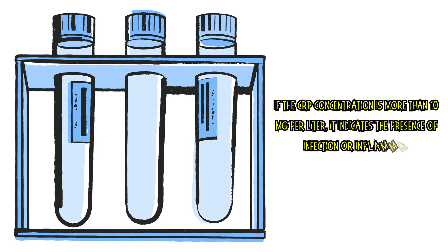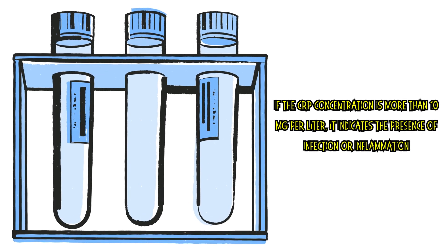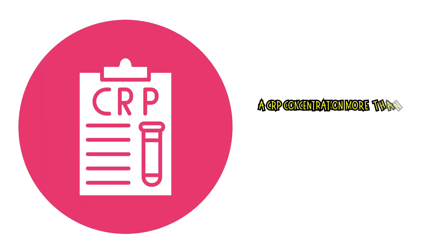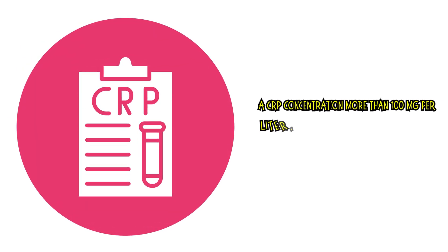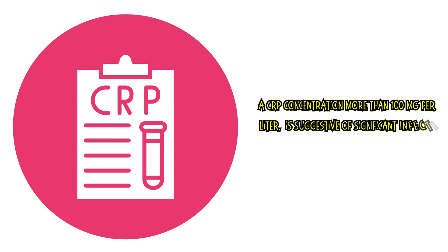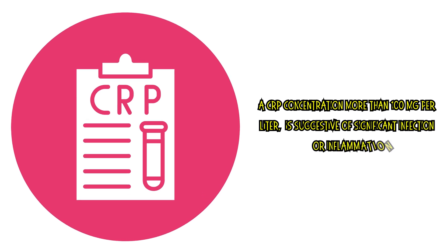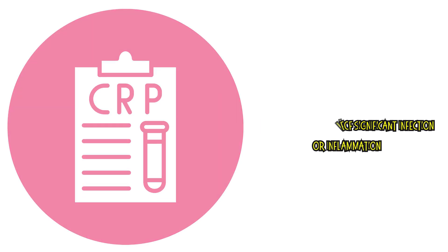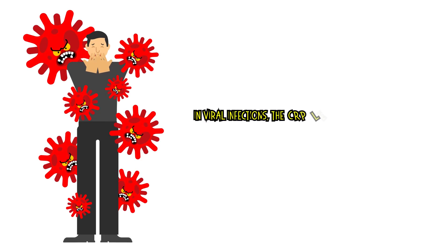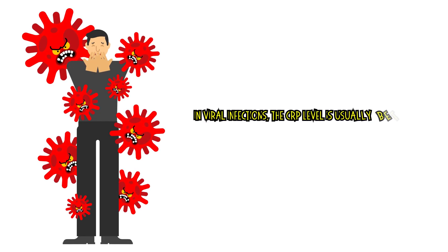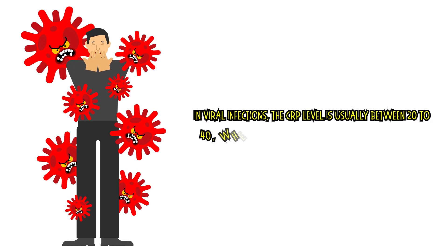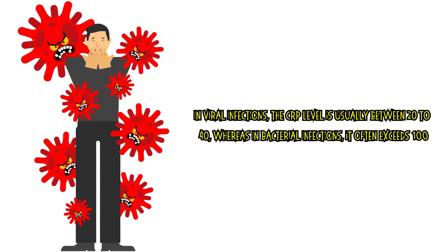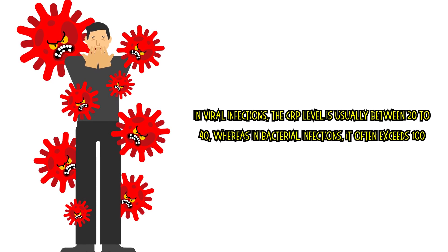A CRP concentration more than 100 mg per liter is suggestive of significant infection or inflammation. In viral infections, the CRP level is usually between 20 to 40 mg per liter, whereas in bacterial infections it often exceeds 100 mg per liter.